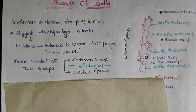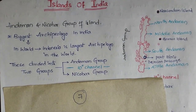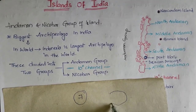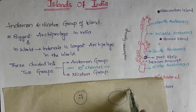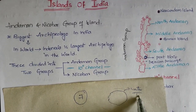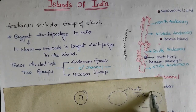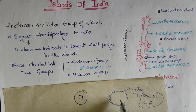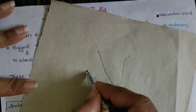Hey everyone, welcome to Civil Index, this is Poojita. This is our seventh video of Indian geography and we are discussing about physical features of India. Now we go to islands. An island is a piece of land which is surrounded by water on all four sides. That water may be a sea, ocean, lake, or river — if a piece of land is surrounded by water, it is called an island.